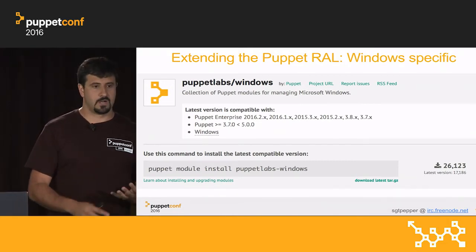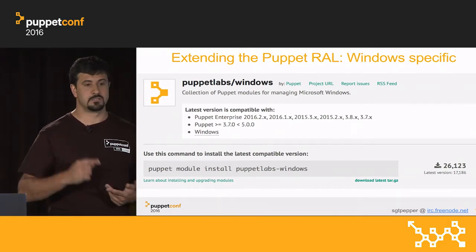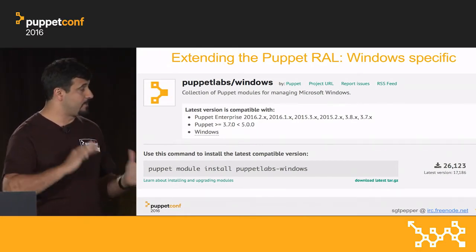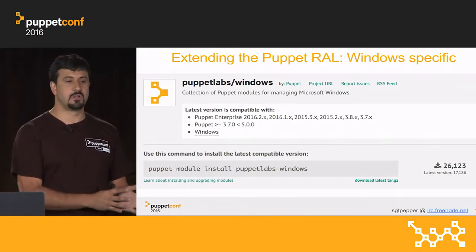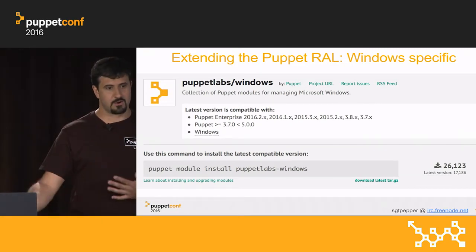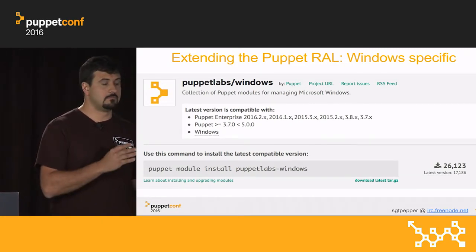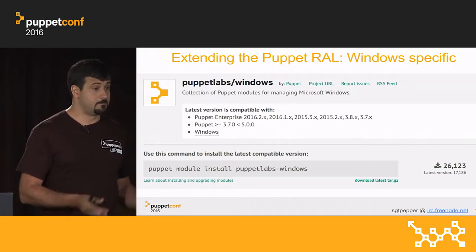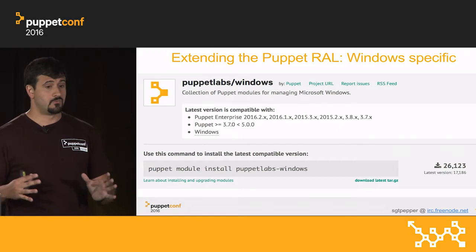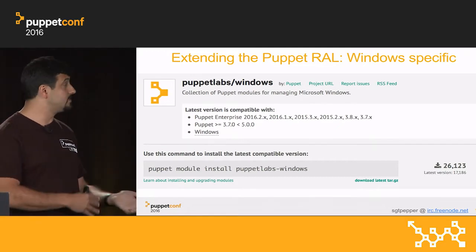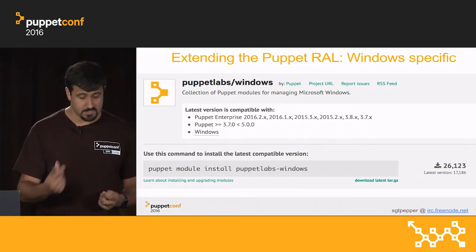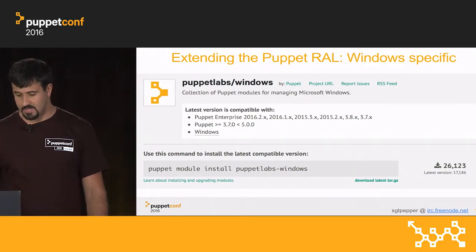For platform-dependent things, we would generally put that in a module. That doesn't mean it's supported better or worse in Puppet — it's just the packaging. Puppet on its own supports about 20 or 25 base resources; the rest is extended through modules. And all these modules, if you're using Puppet Enterprise, are supported. When I talk about Windows specifics, I'm talking about things like ACLs, the ability to execute PowerShell scripts, or the PowerShell DSC configuration engine.